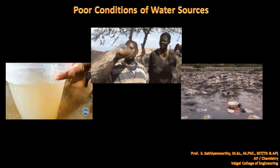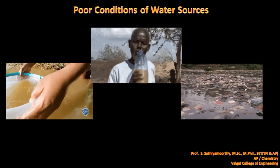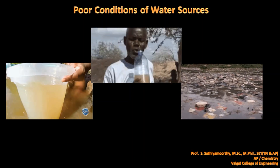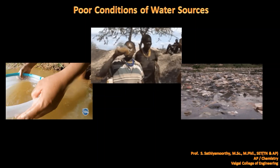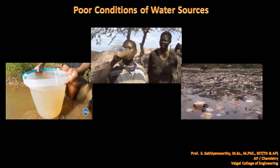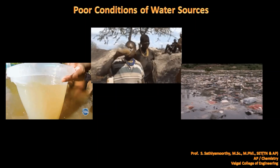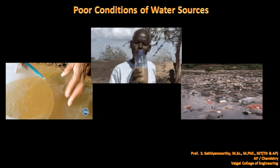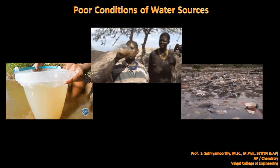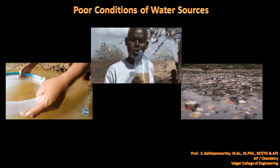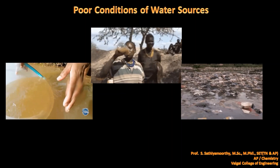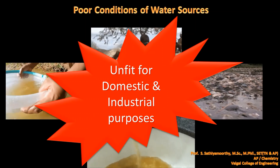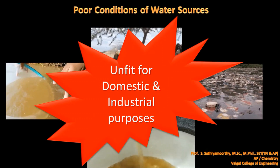Here we can see images of poor conditions of water sources. In the first two images we can see how the water is turbid, and in the third image we can see how a fresh water body is polluted by human beings. Do you think these waters are fit for domestic and industrial purposes? No — waters from these sources are unfit for domestic and industrial purposes.